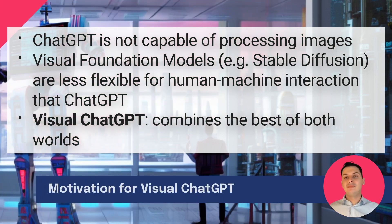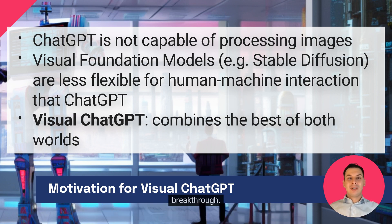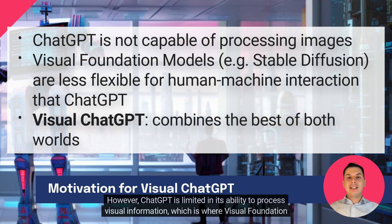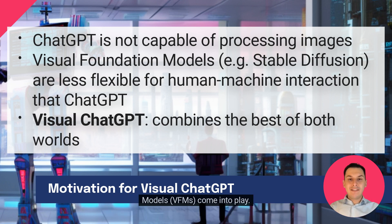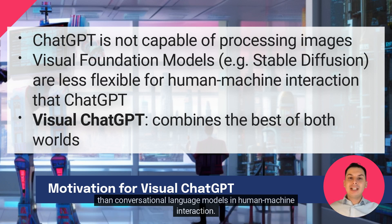Large language models, LLMs, have made incredible progress in recent years, with ChatGPT being a significant breakthrough. However, ChatGPT is limited in its ability to process visual information, which is where visual foundation models, VFMs, come into play. VFMs, such as BLIP and Stable Diffusion, have shown great potential in computer vision, but are less flexible than conversational language models in human-machine interaction.